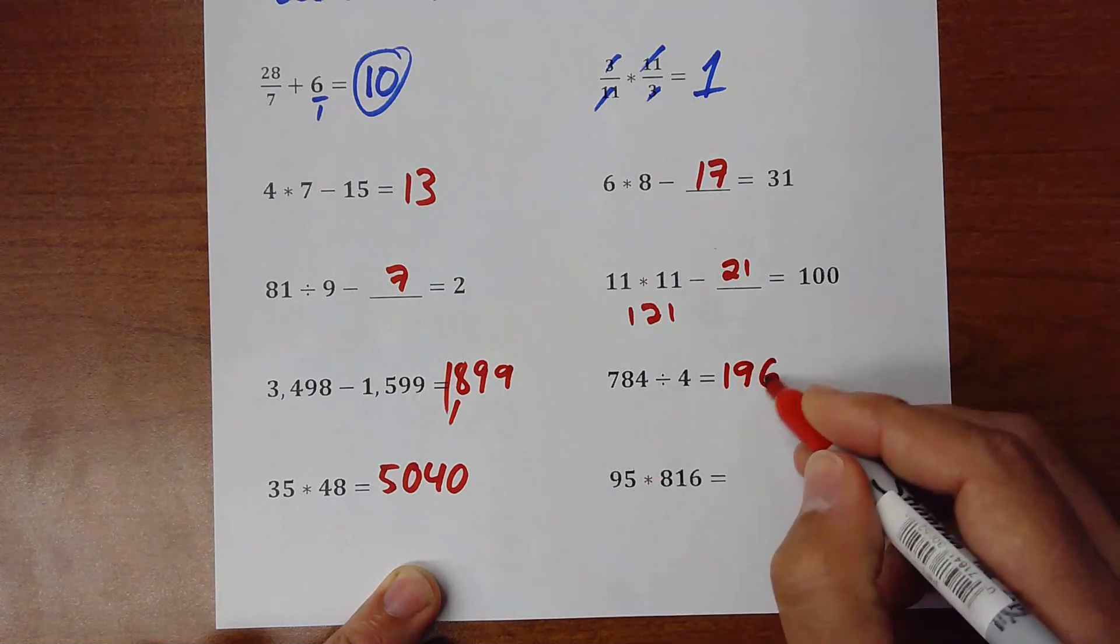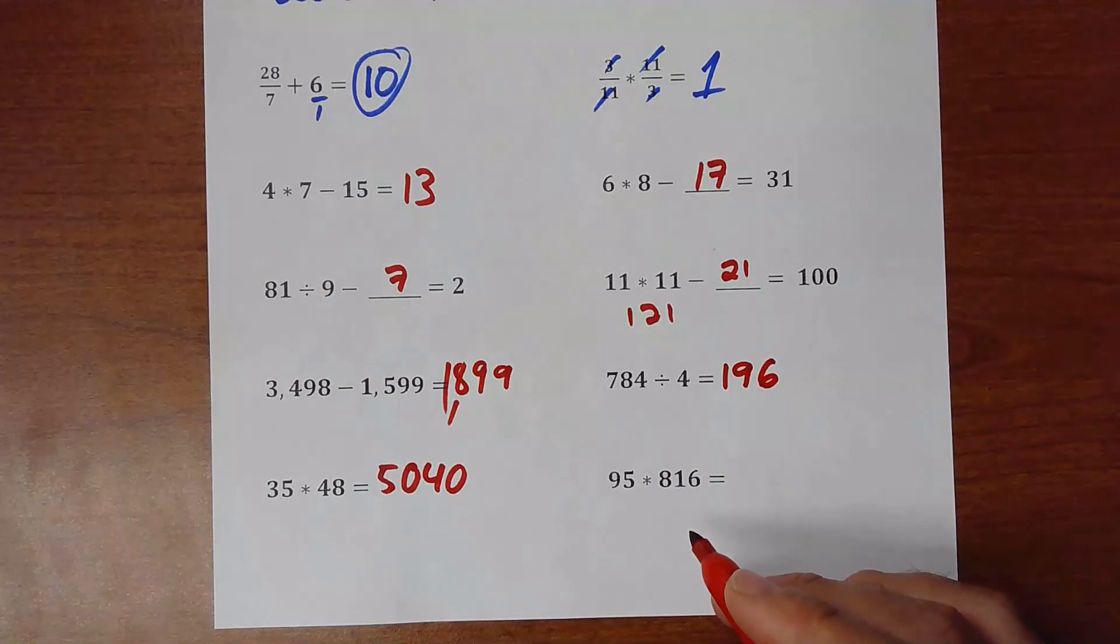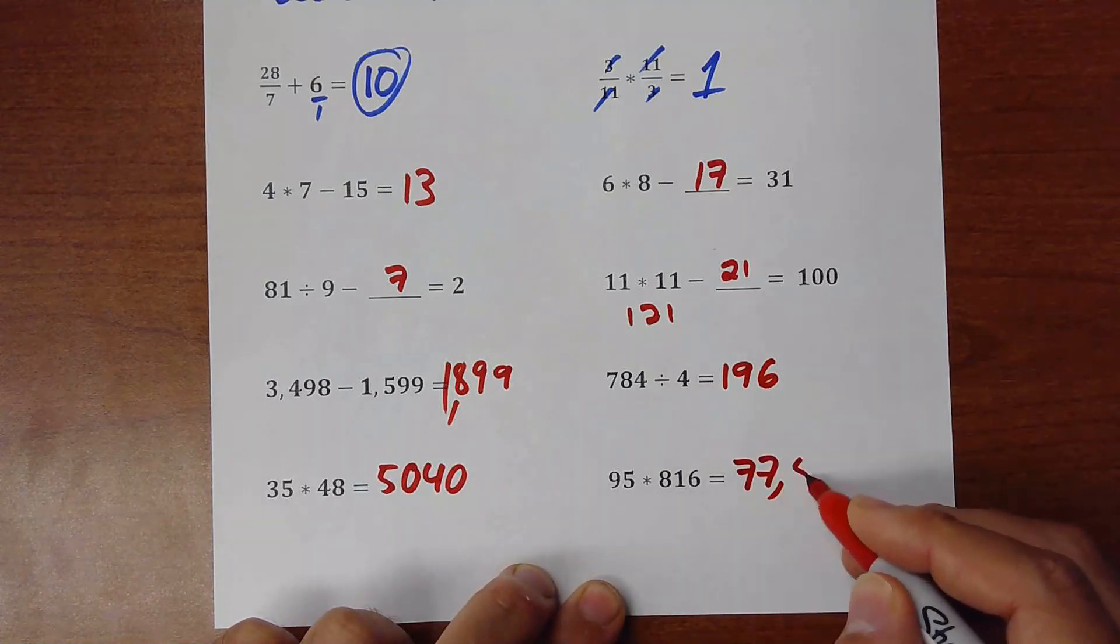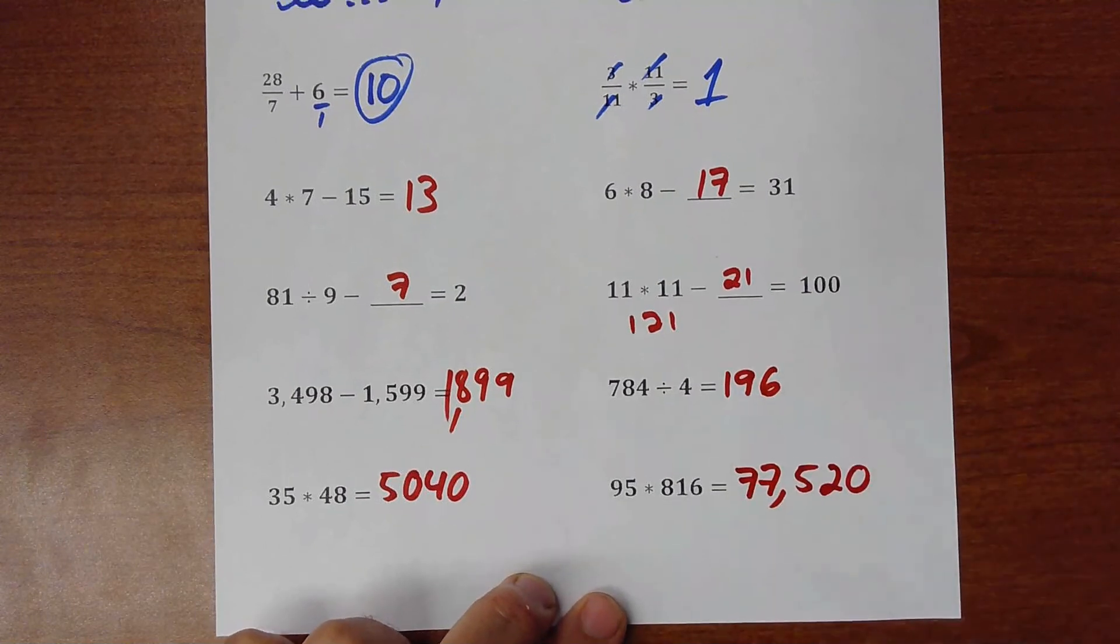And this one, the same thing. 95 times 816. That will be 77,520. Okay?